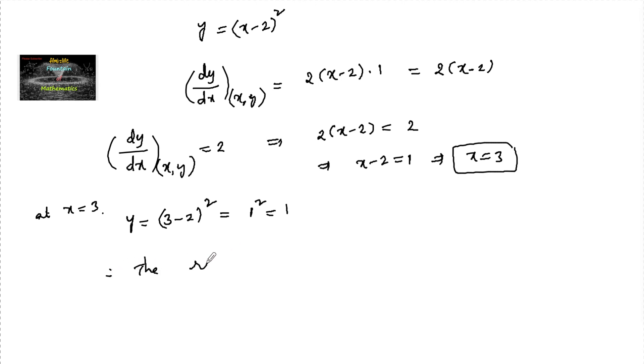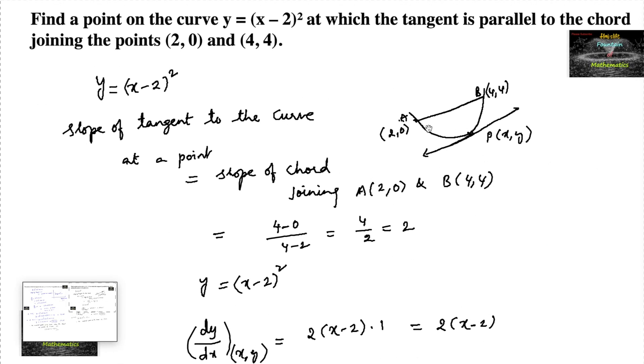Therefore, the required point on the curve can be taken as (3, 1). At this point, we can find the slope of tangent which is parallel to the slope of chord given points.